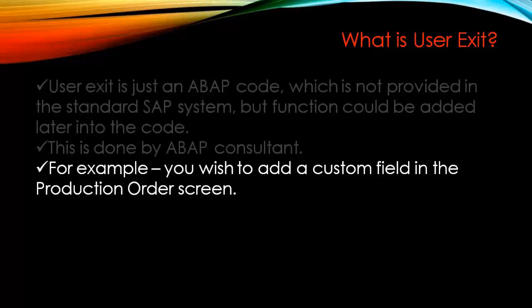For example, you may wish to add a custom field in the production order screen — a custom date, a custom quantity, a serial number, or any extra field. It can be a numeric field, a character field, or an alphanumeric field. These are examples of the function of user exits.